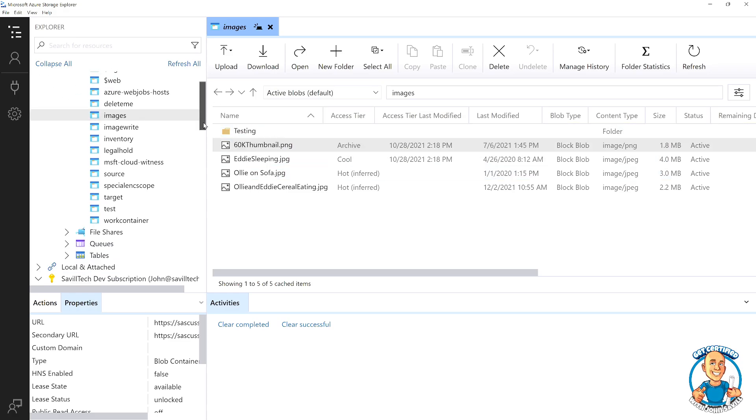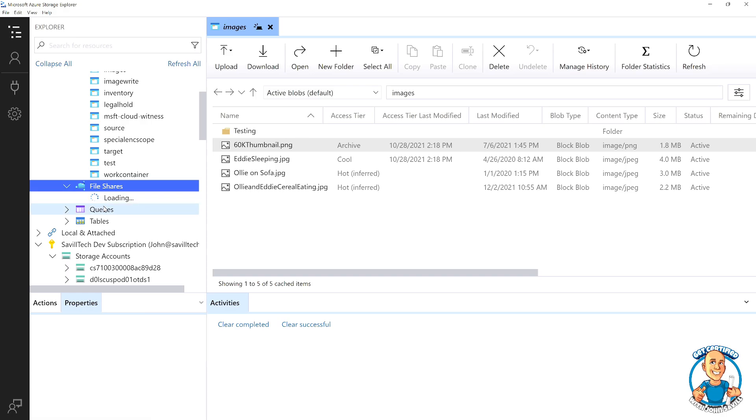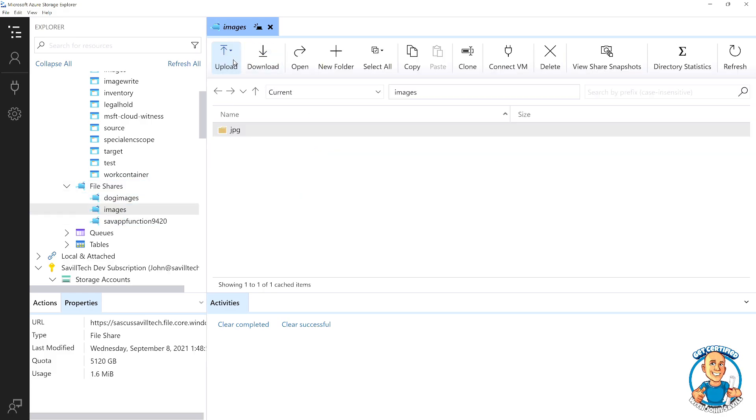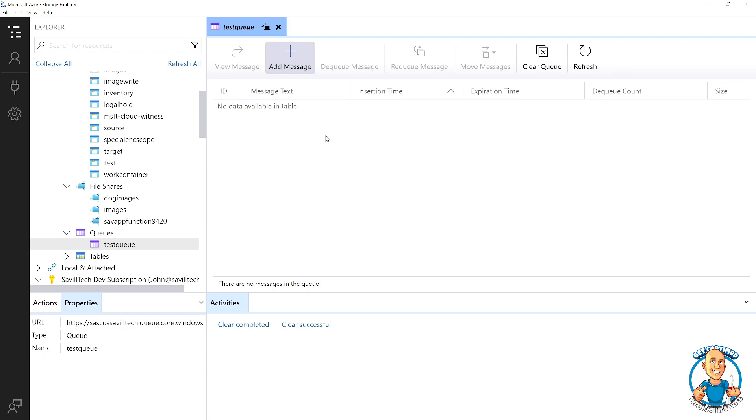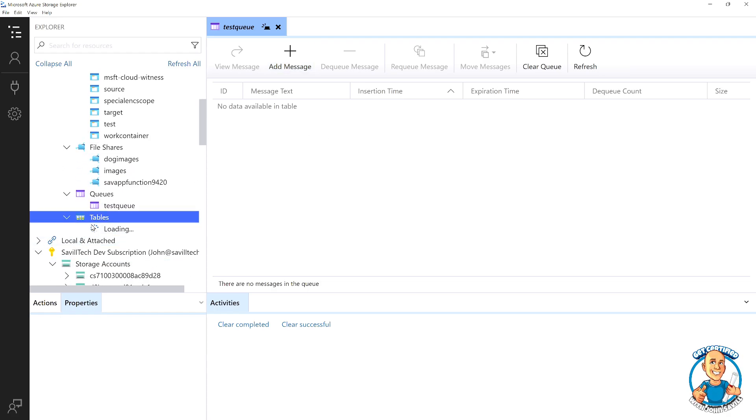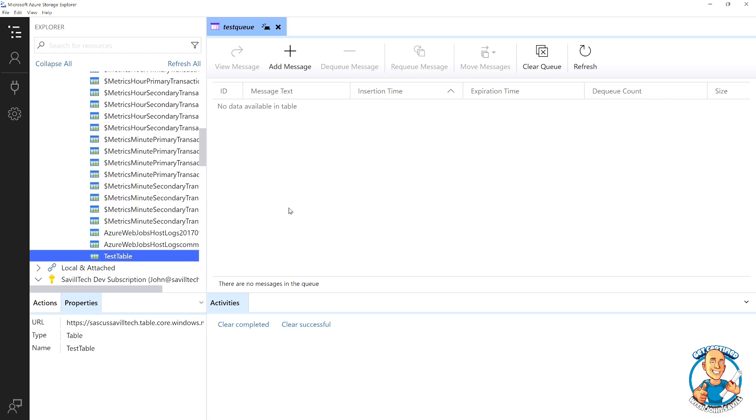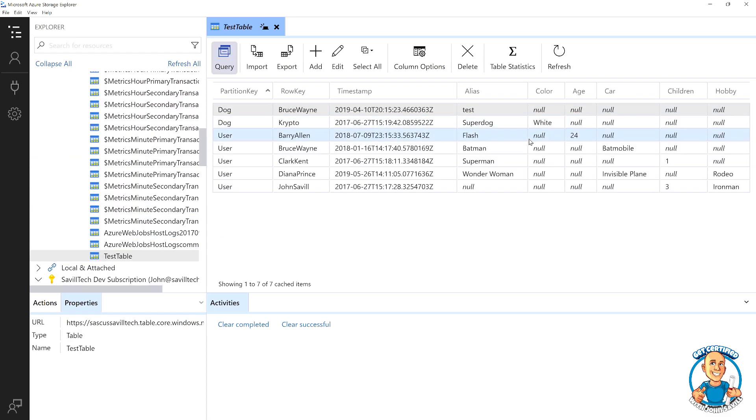I can also change the tier. I can interact with my file shares, doing the same idea of uploading folders and files or downloading. It also lets me interact with queues—I can add a message, dequeue a message—and also lets me interact with tables. I can add various key value pairs to the content. So Storage Explorer lets me really interactively upload and download content.